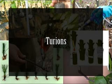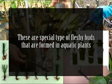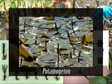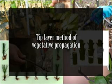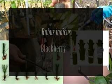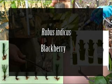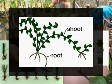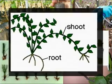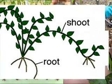Turions are a special type of fleshy buds formed in aquatic plants for vegetative propagation — for example, Potamogeton and Utricularia. In the tip-layering method, plant species like Rubus indicus and blackberry spread by having arching shoots that ultimately touch down onto the soil. The rubbing of the stem on the soil and its horizontal position cause auxins to build up, which induce root formation.